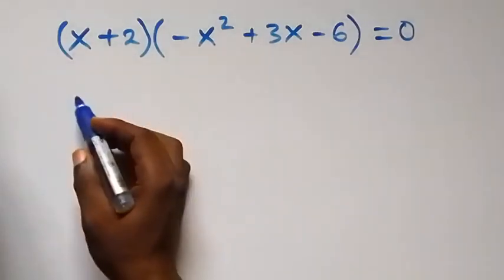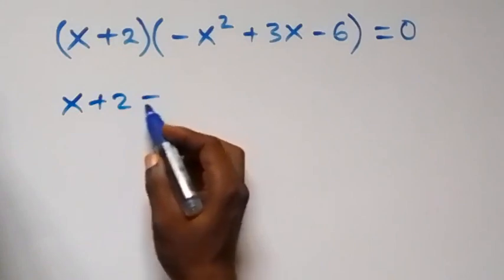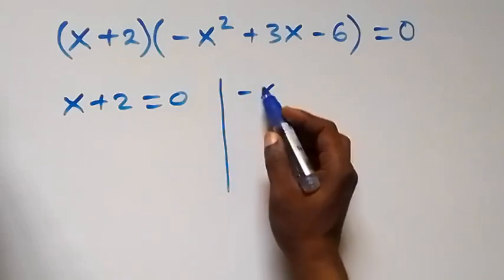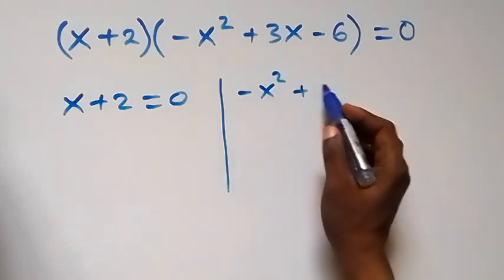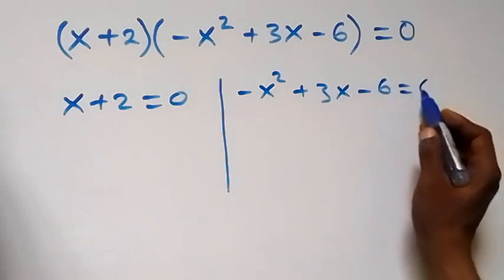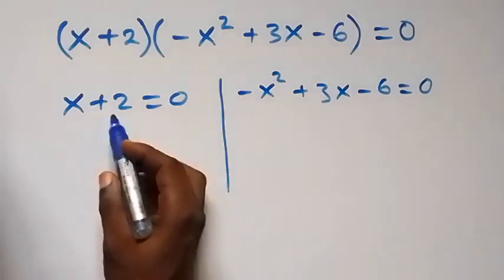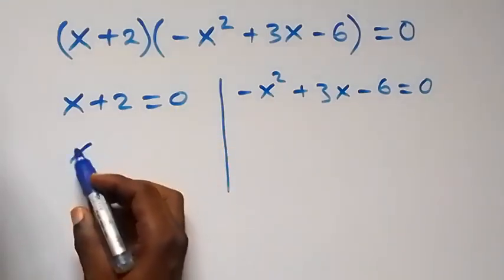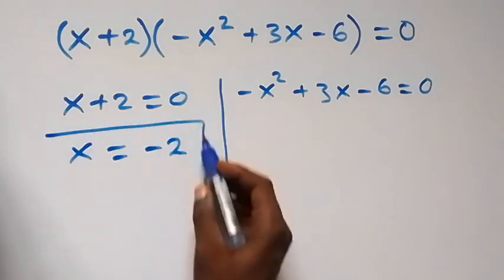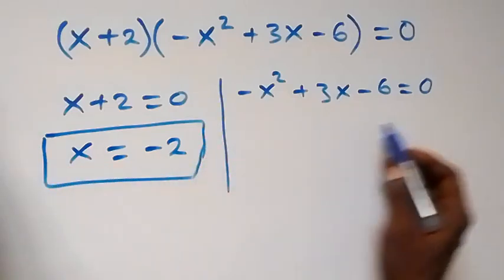We have two possible cases. The first one: x plus 2 equals zero, and the other one: minus x squared plus 3x minus 6 equals zero. From the first case, x equals minus 2.